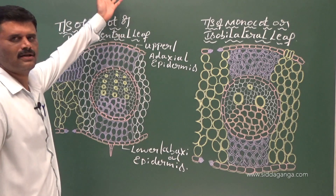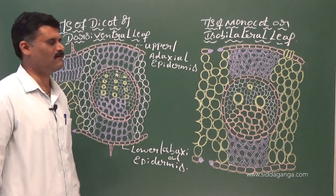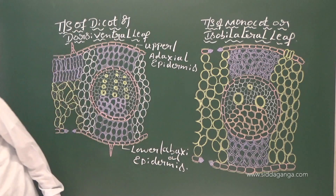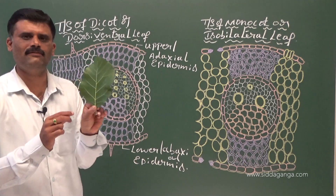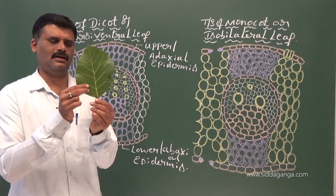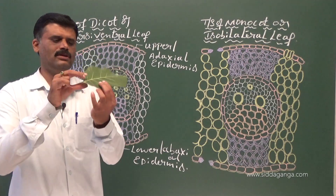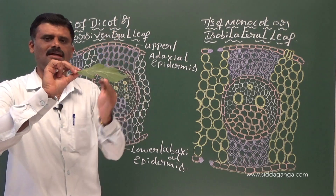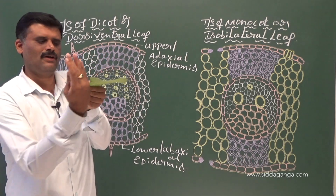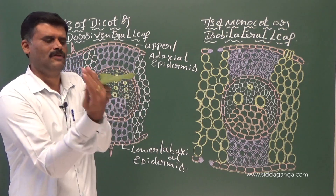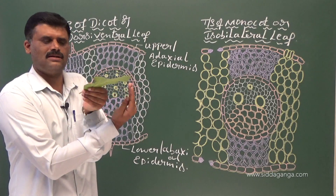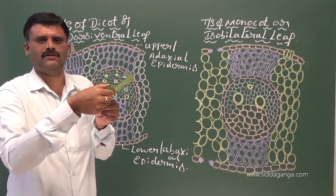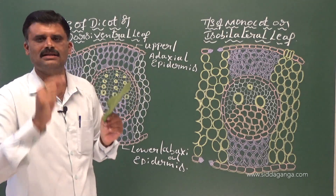The epidermis situated towards the upper side of the leaf is called adaxial, and the one on the lower side is called abaxial. This is the dicot leaf — they have taken the tectona grandis leaf, that is, the teak leaf. This is the upper or adaxial surface and this is the lower or abaxial surface. When you take the transverse section, it reveals both abaxial and adaxial surfaces.